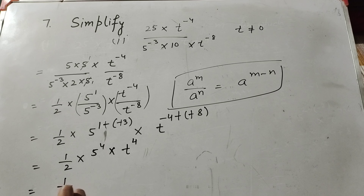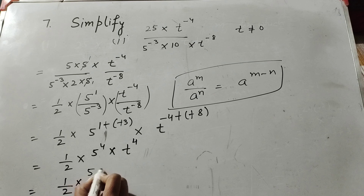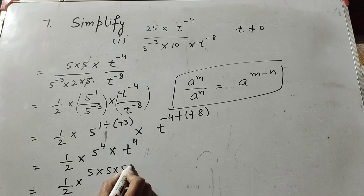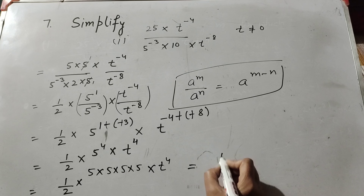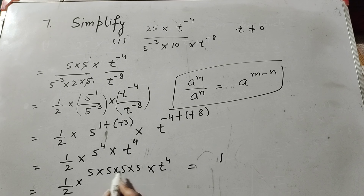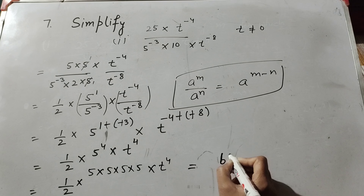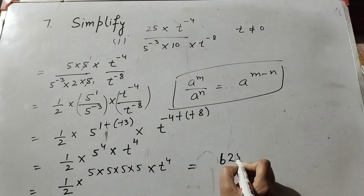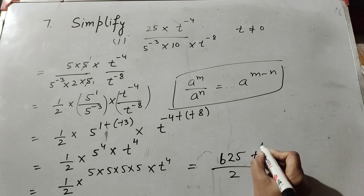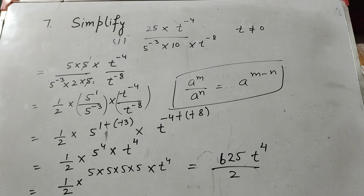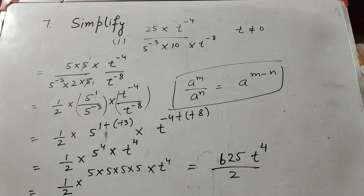It is equal to 1 over 2 into 5 raised to power 4, which is 4 times repeated multiplication of 5, into t raised to power 4. And it is equal to 1 over 2 into t raised to power 4. This is the answer.